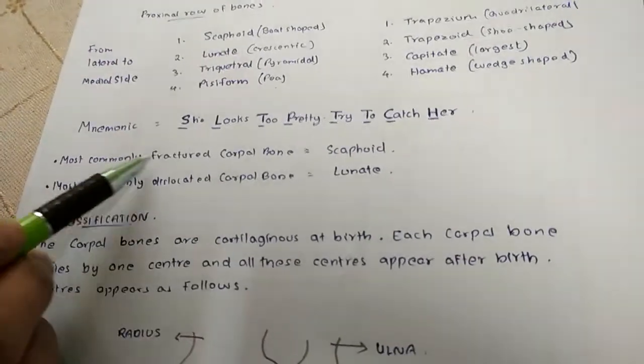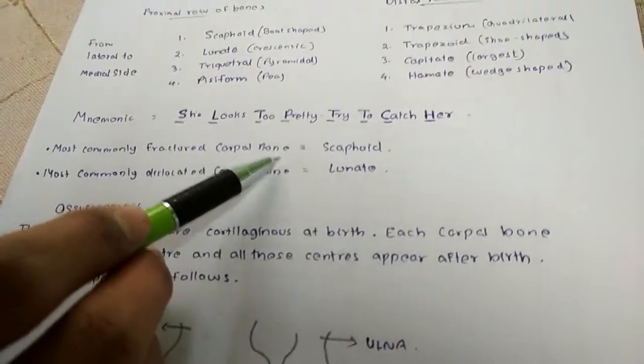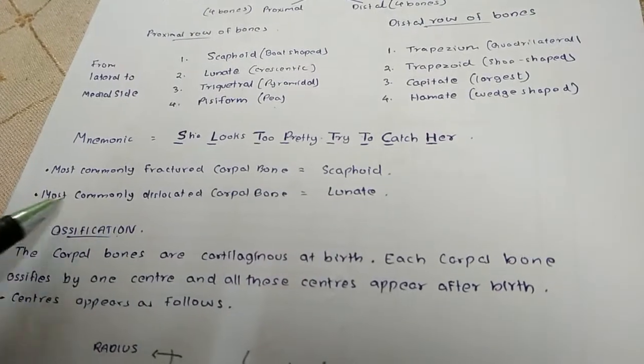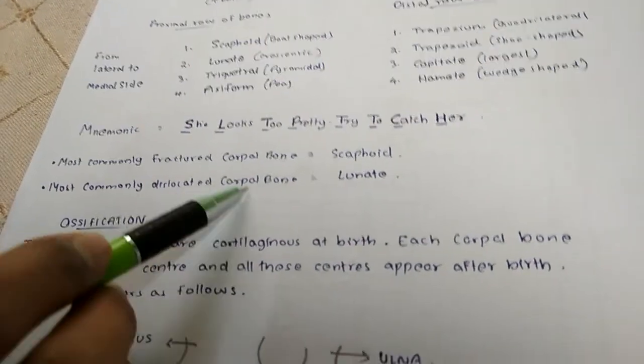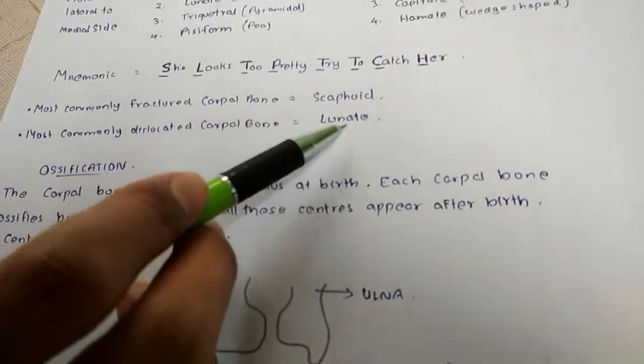Now the most commonly fractured carpal bone is scaphoid. The most commonly dislocated carpal bone is lunate, the crescent shaped one.